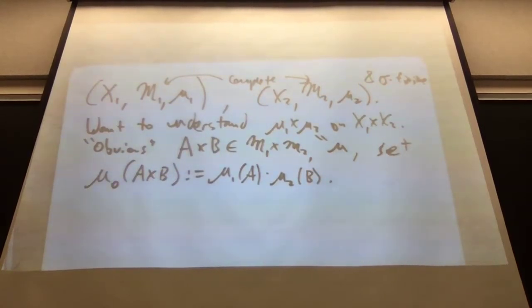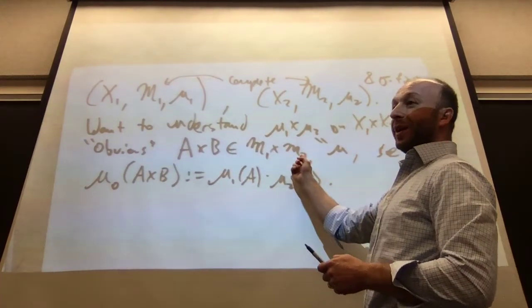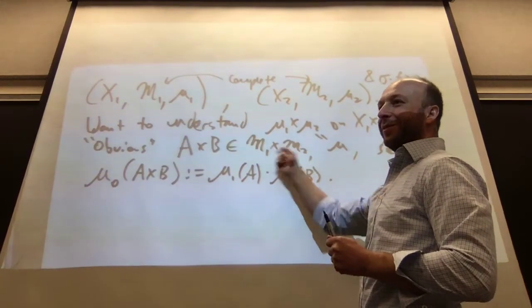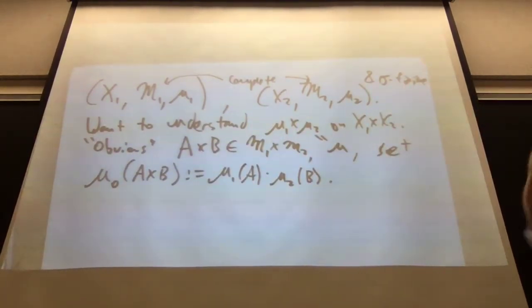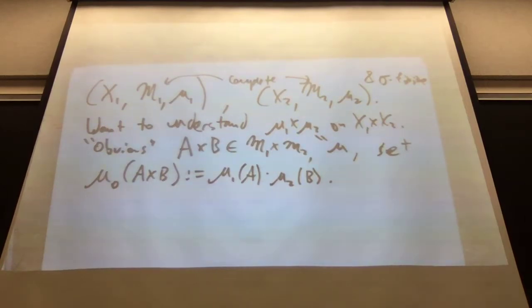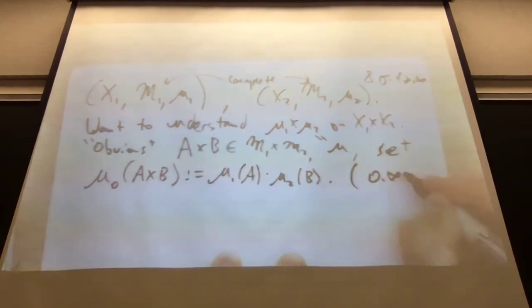We have to prove that this definition extends to something that is a pre-measure on an algebra, and then we hit it with Carathéodory. So why is there more to do? The cross of these two sigma algebras is not even an algebra, let alone a sigma algebra. As always, zero times infinity is declared zero.